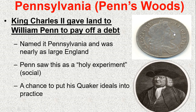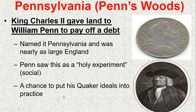Our next colony is Pennsylvania, known as Penn's Woods. King Charles gave this area to William Penn to pay off a debt owed to Penn's father. William Penn was a Quaker, and the Quakers had ideals very different from and conflicting with the Anglican Church. They were oppressed and persecuted for these ideals. As a way of promoting English colonial growth, Penn was given a charter to this massive area, the debt was paid off, and William Penn saw it as an opportunity to put his Quaker ideals into practice.